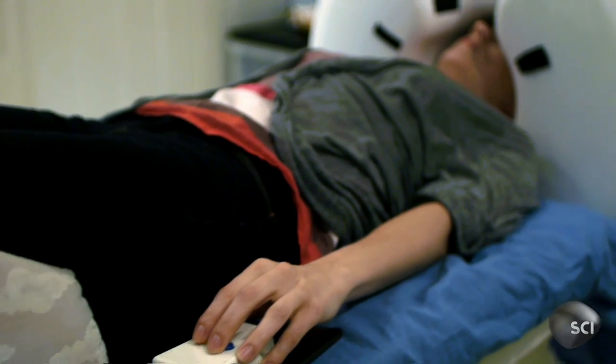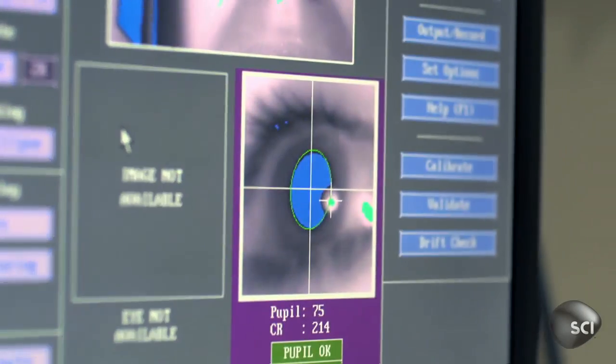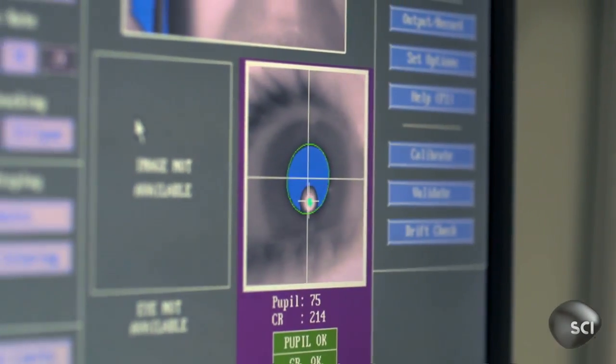Brain activity is basically just electricity. So it measures the magnetic fields that are generated by brain activity inside your head. It's one of the few ways we have to get access into the internal workings of your mind.